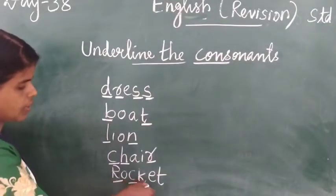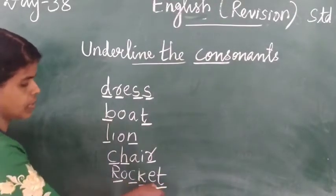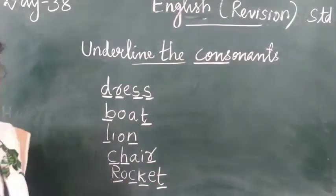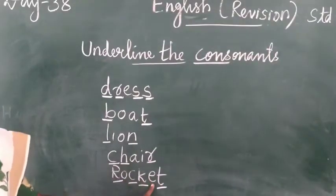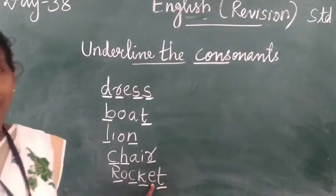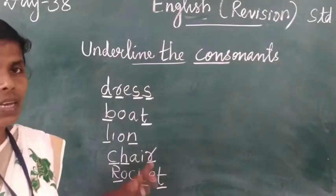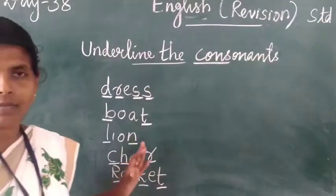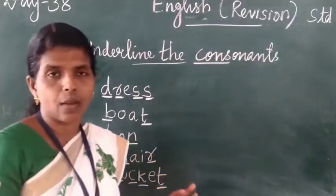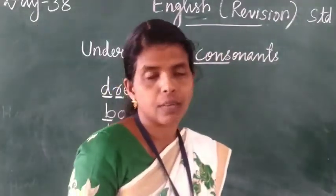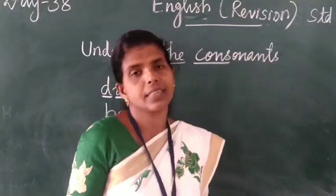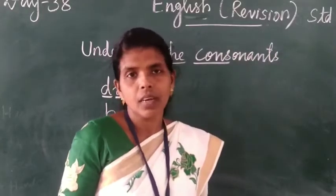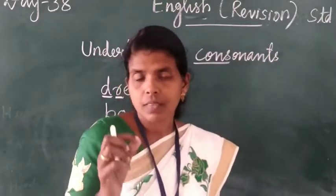In rocket, R, C, K, T are consonants. O and E are vowels. So to summarize: A, E, I, O, U are called vowels, and the remaining letters are called consonants.